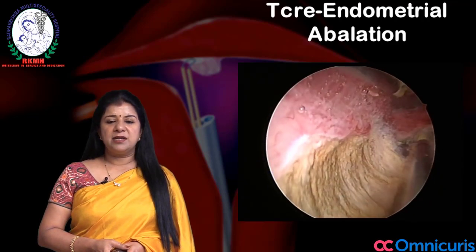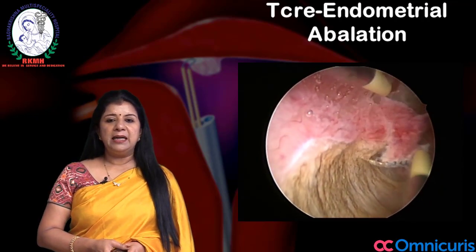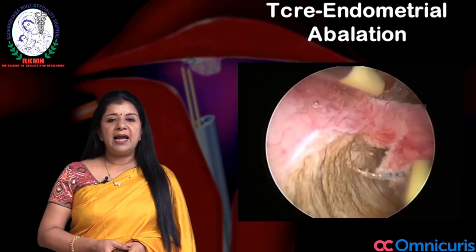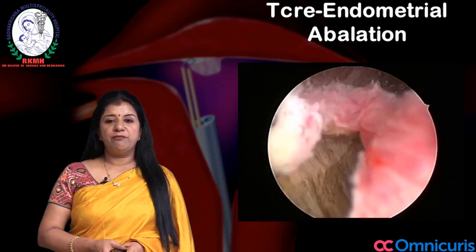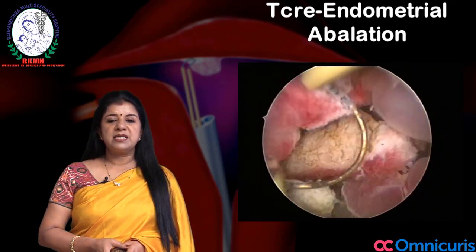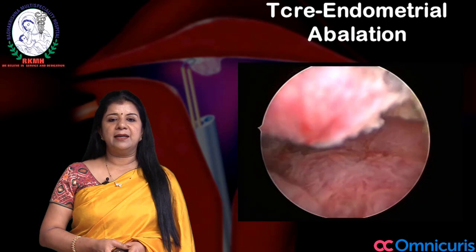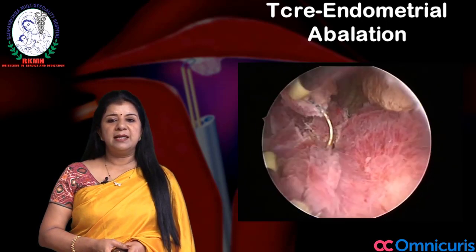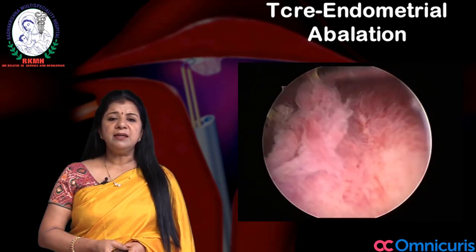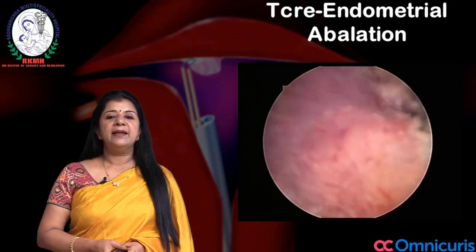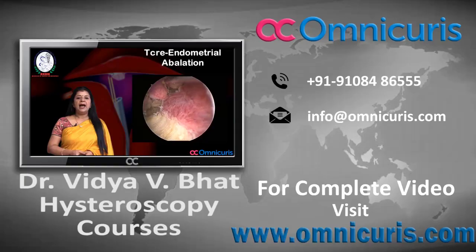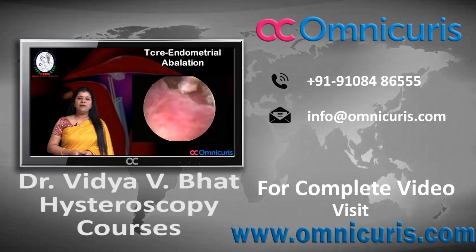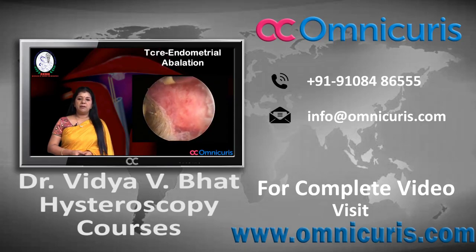As you go to the lateral wall from the middle, the lateral wall also is taken off, because as the uterus is enlarged in a globular pattern, part of the lateral wall is taken off as you do the posterior wall. Then you go to the lateral wall and take the loops, and you have to take loops throughout — that is from the fundus of the uterus up to the internal os.